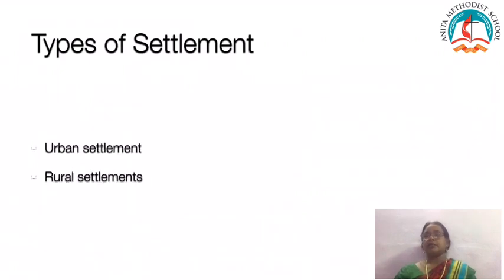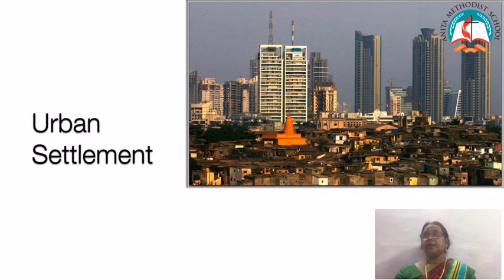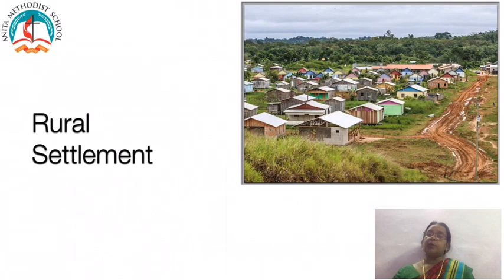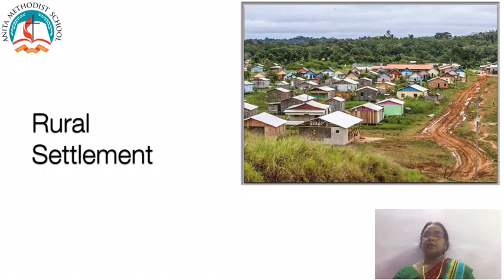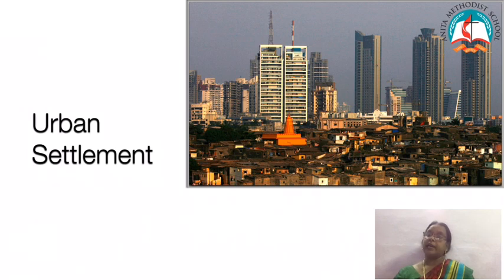An urban settlement engages in activities such as industries, trade, and banking. A rural settlement involves agriculture, lumbering, fishing, and mining. Rural settlements have a small population and a low population density, whereas an urban settlement has a large population and a high population density.